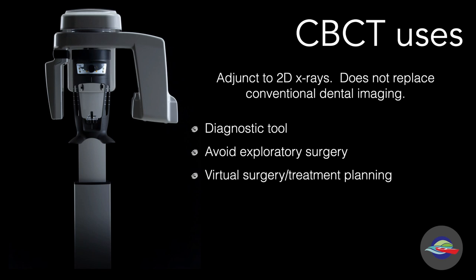We use CBCT when it's appropriate as a diagnostic tool. For example, in patients with a really heavy gag reflex who can't bear a full mouth series of x-rays. We use the CBCT to avoid exploratory surgery. In the past, unless there was a gross crack or fissure in a tooth, a standard 2D PA may not have picked it up.